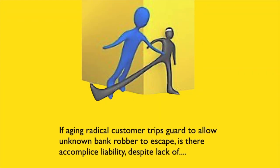Consider this hypothetical: if an aging radical customer trips a guard to allow an unknown bank robber to escape, is there accomplice liability despite lack of nexus? The answer is yes. Nexus only functions as one type of evidence of the accessory's purpose to aid the principal. Evidence of purpose, however, can take other forms.